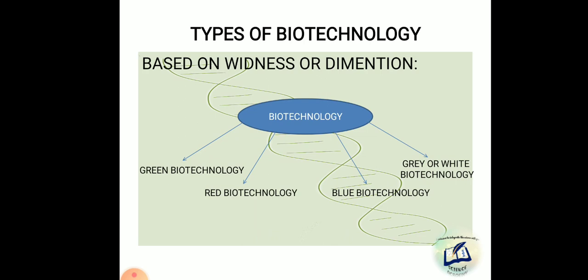Green biotechnology refers to agricultural biotechnology — the development of agriculture by the use of biotechnology. Examples of green biotechnology are BT cotton and BT brinjal. Red biotechnology refers to medical biotechnology, dealing with diagnosis of diseases as well as treatment of those diseases. Gene therapy and DNA vaccines are examples of red biotechnology.